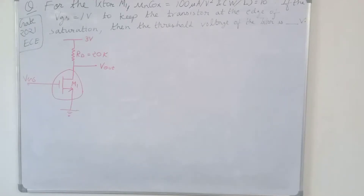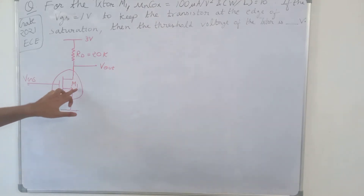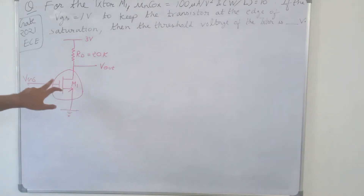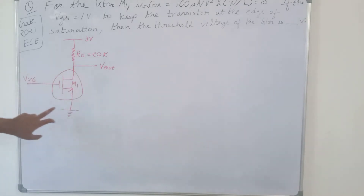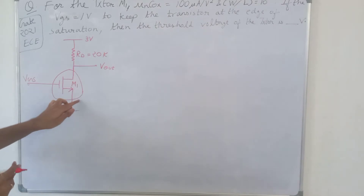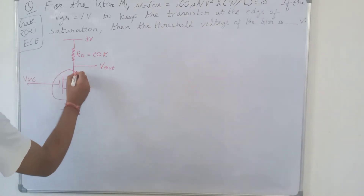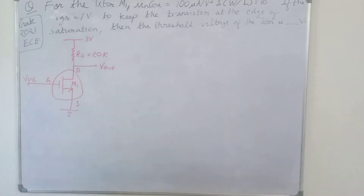This question is from GATE 2021 electronics branch and transistor M1 is given. This symbol is a MOSFET — specifically an N-channel MOSFET. This is the source of the MOSFET, this is the drain, and this is the gate of the MOSFET.